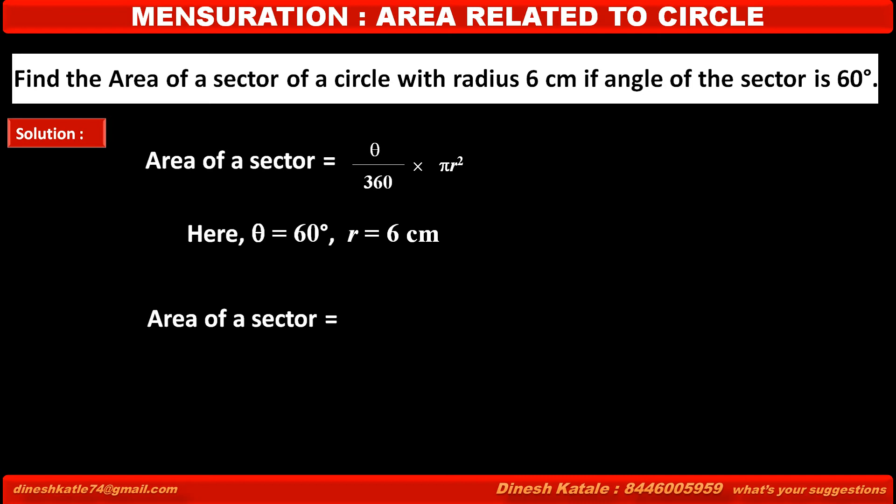So required area of a sector is equal to value of theta 60 upon 360 into value of pi 22 upon 7 into r square that is 6 square is equal to solving the above calculation we get 132 upon 7.